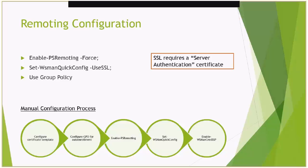First, on your PKI, configure the server authentication certificate template. Configure the GPO so clients can auto-enroll and get a server authentication cert. Once that cert is published, run Enable-PSRemoting to enable WinRM. Then run Set-WSManQuickConfig, which handles the certificate binding to WinRM. Finally, there's Enable-WSManCredSSP, which enables certain scenarios — particularly double-hop authentication — and we'll get into that in more depth in a future slide.